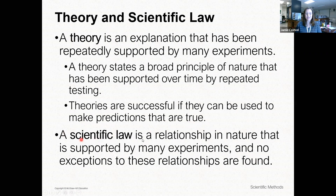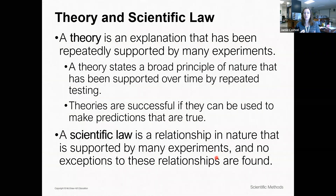A scientific law is a relationship in nature supported by experiments with no exceptions found. For example, the law of gravity: if I throw something up in the air, it will come down. The theory of gravity has been proven so many times that I can state the law. A law dictates a relationship — if/then — and a theory explains why, based on all of the evidence provided previously.